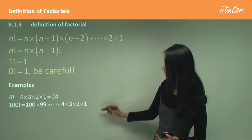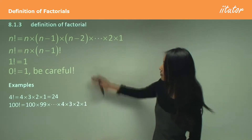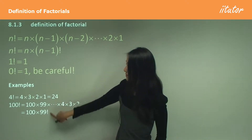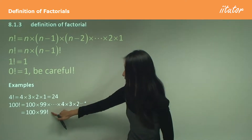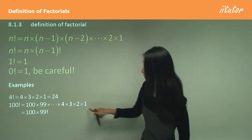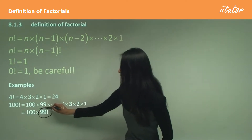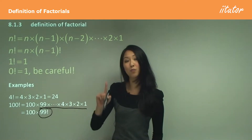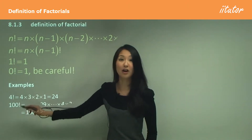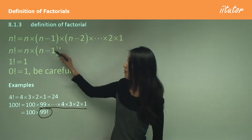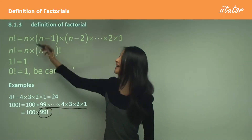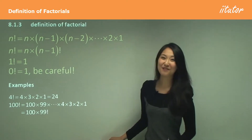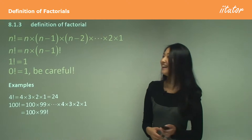For 100 factorial, it becomes 100 × 99 × 98, and so on until 1. We can use the rule that 100 factorial is exactly the same as 100 times 99 factorial, because 99 factorial encompasses 99 × 98 and so on until 1. Just remember: if you multiply (n−1) factorial by n, you get n factorial.